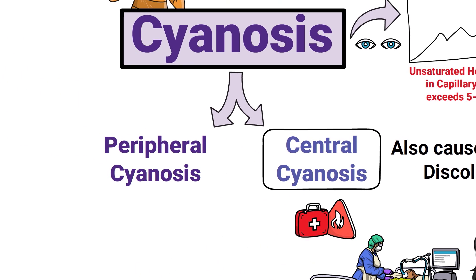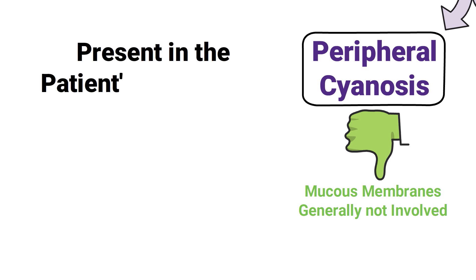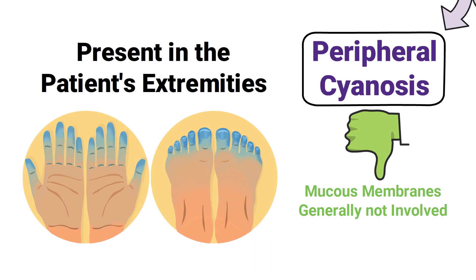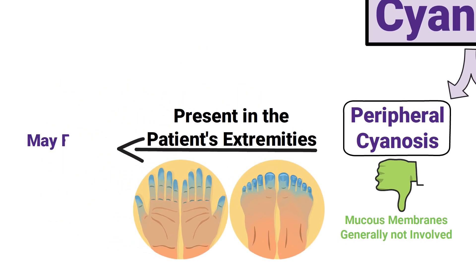In comparison, this is rarely the case for peripheral cyanosis because the mucous membranes are generally not involved. Instead, peripheral cyanosis is present in the patient's extremities — it is usually seen in the fingertips, but is also sometimes visible in the hands and toes as well. The patient's extremities may feel cool to touch whenever peripheral cyanosis is present.